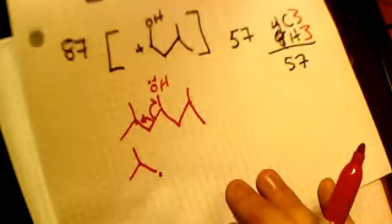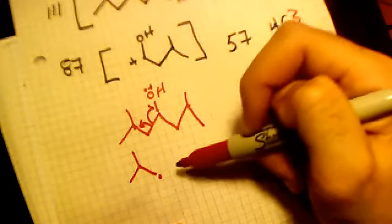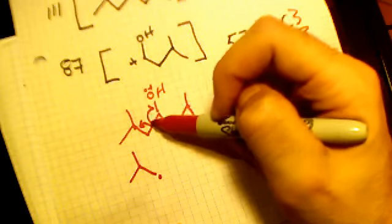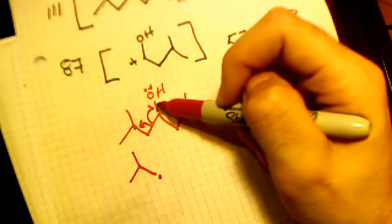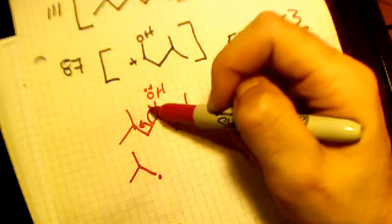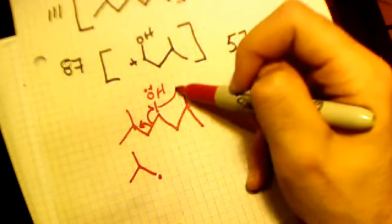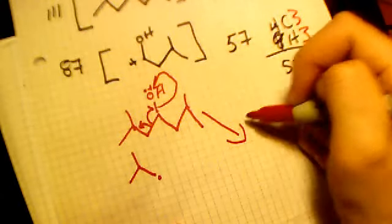Sorry if you didn't see all that - this is the first time I'm making these videos. So that electron went up there, and we got this. Then this donated whatever was given to this bond up here to satisfy the oxygen, and that's how we got this molecule.